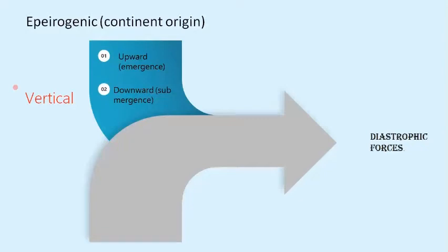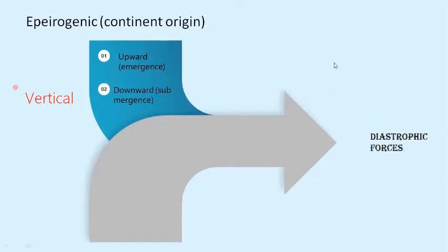Epeirogenic movements are called radial movements because they act along the radius of the earth. This movement is either subsidence — towards the center — or away from the center. Moving towards the center means downward; moving away from the center means upward. So these are called vertical movements.